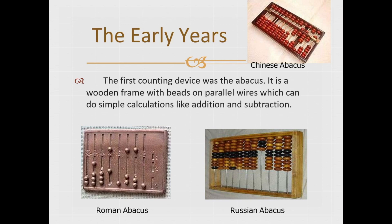I told you about early calculating machines, and the first counting device was Abacus. It is a wooden frame with beads on parallel wires which can do simple calculations like addition and subtraction. As you can see on the screen, Abacus is shown there.